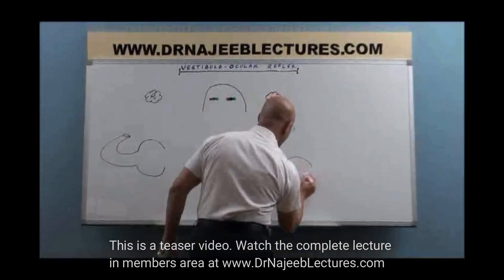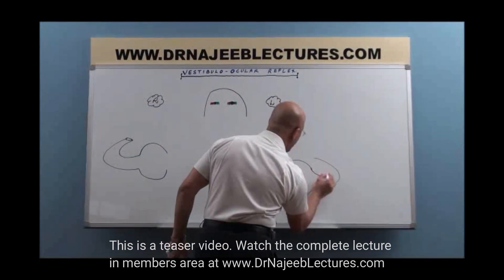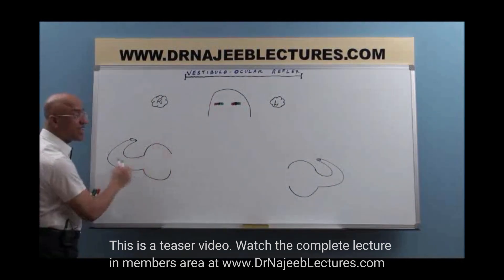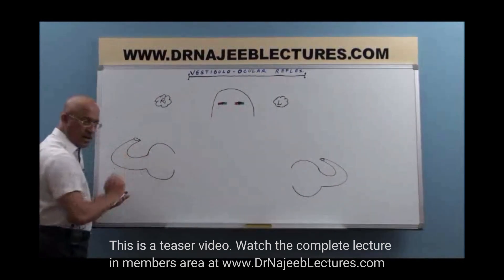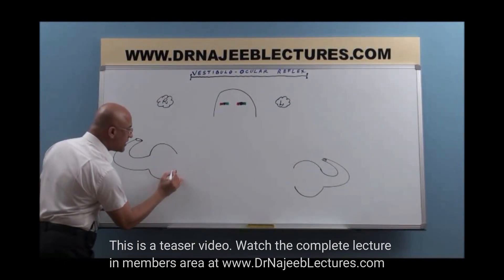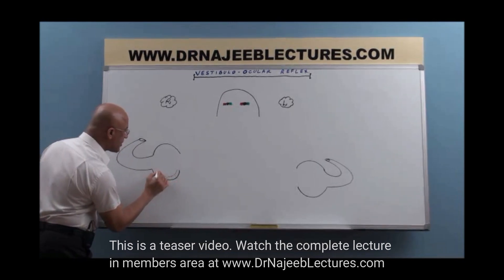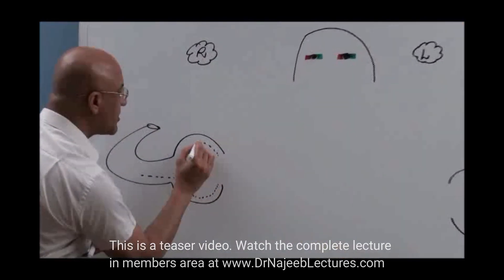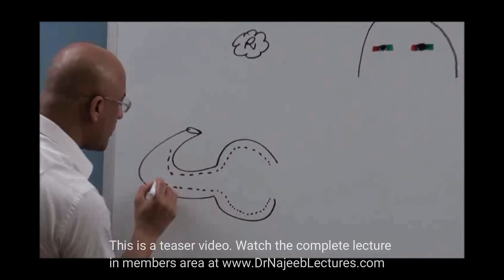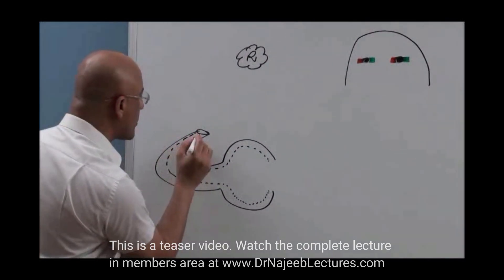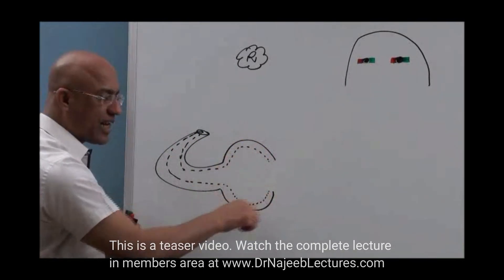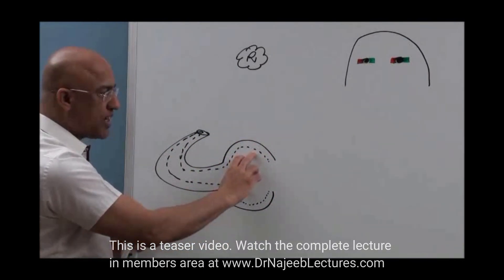In the semicircular canal, there is a bony canal made of bone. Within this canal there is a membranous duct. The swollen part of the canal is called the ampulla. The semicircular canal system has the membranous duct within the bony canal, and the swollen part is the ampulla.